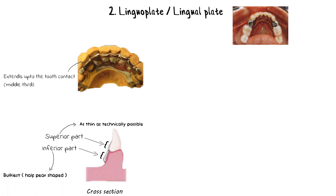The superior border of the lingual plate should be made as thin as technically possible to avoid adding unnecessary bulk and weight to the prosthesis, while the inferior border should be the bulkiest part with the same half-pear shaped design as the lingual bar. The superior apron must be composed of very thin metal extending up to the contact points of the anterior teeth.